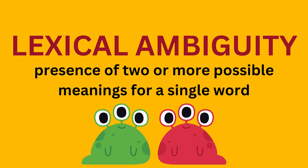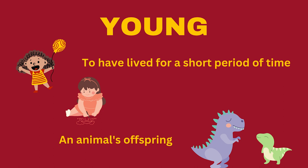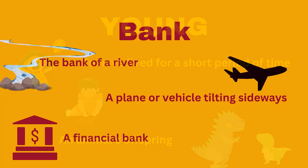This occurs frequently. One example is the word 'young.' This is lexical ambiguity because it has two different meanings: one, to have lived for a short period of time — in a sentence: 'Two young children are playing at the park' — or it can also mean an animal's offspring, as in: 'The dinosaur's young has sharp teeth.'